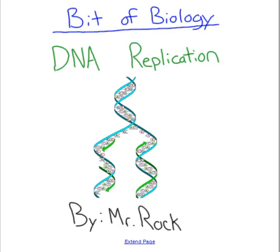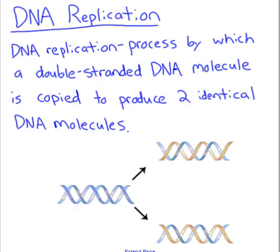This is a bit of biology with Mr. Rock, and today we are going to be talking about DNA replication. DNA replication is a process by which a double-stranded DNA molecule is copied to produce two identical DNA molecules. So what we're essentially doing here is doubling the DNA. DNA replication is a process of replicating the DNA so that we can go into mitosis.